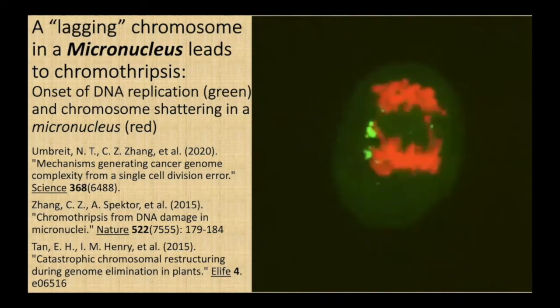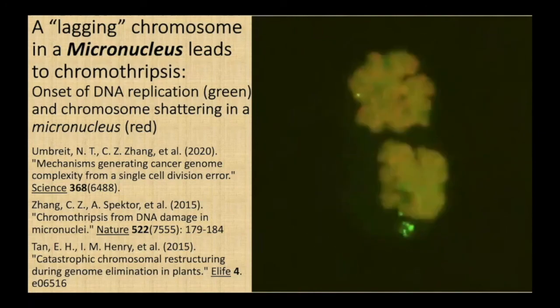Post-division, the partially replicated fragments can be joined into chromothripsis products, and since they've been replicated, there are multiple copies of certain segments, resulting in copy number variations. The fact that micronuclei are also found in plants, associated with DNA damage repair and with chromothripsis, means that micronuclei have a deep history in eukaryotic evolution and the processes of genome change.